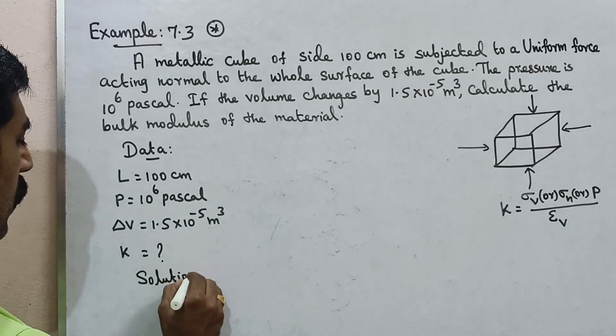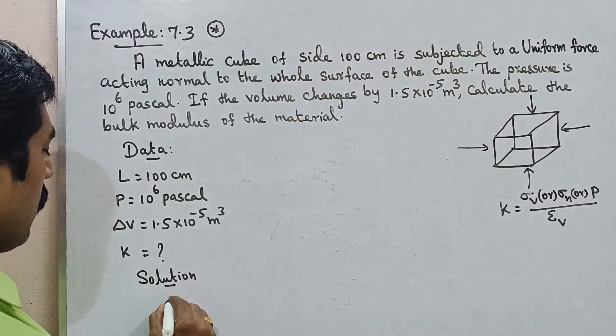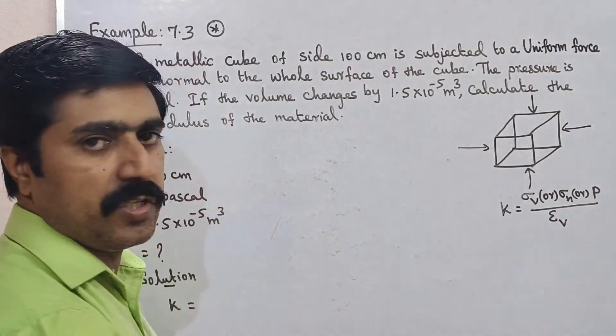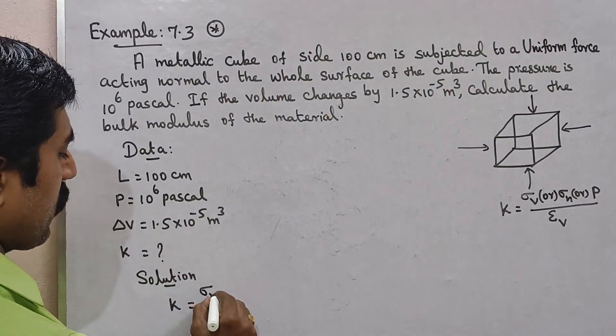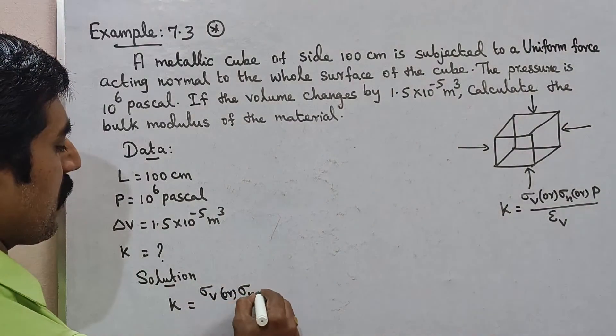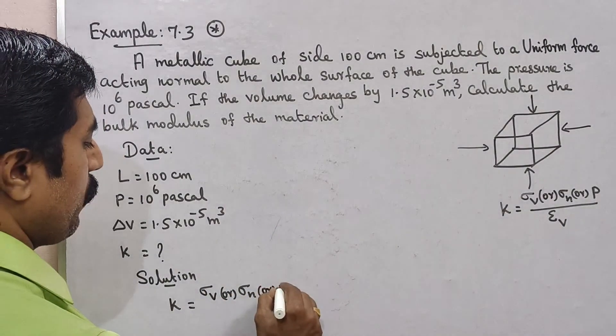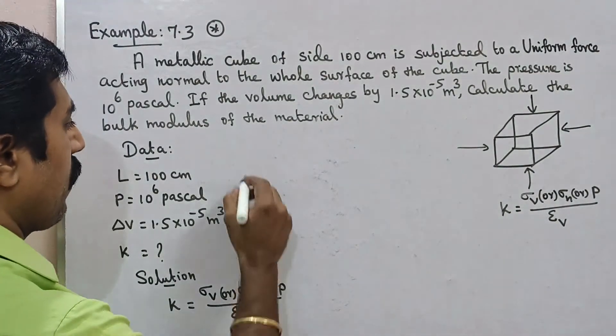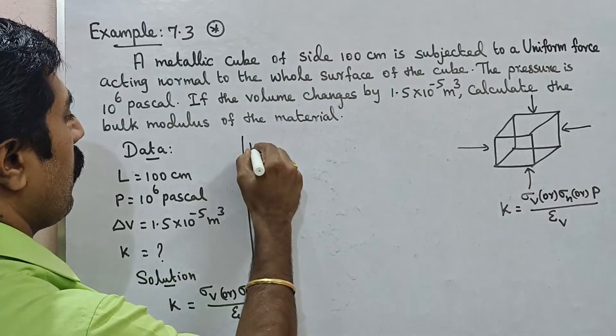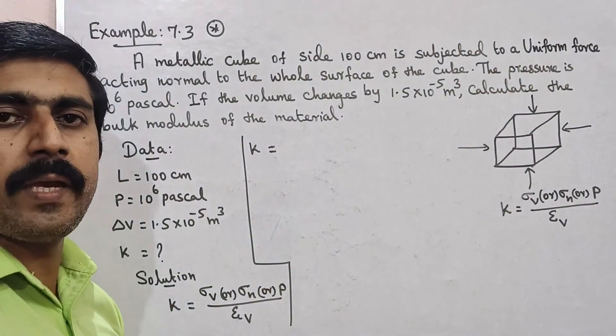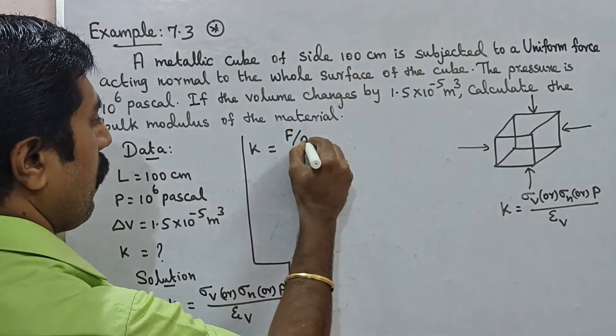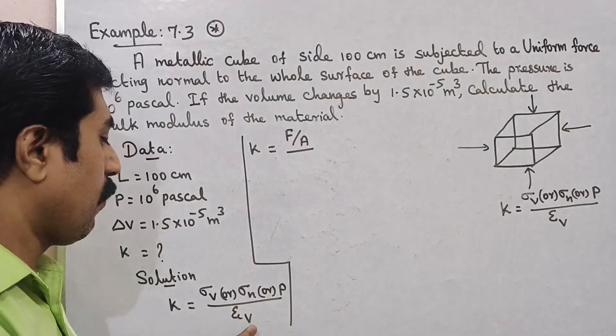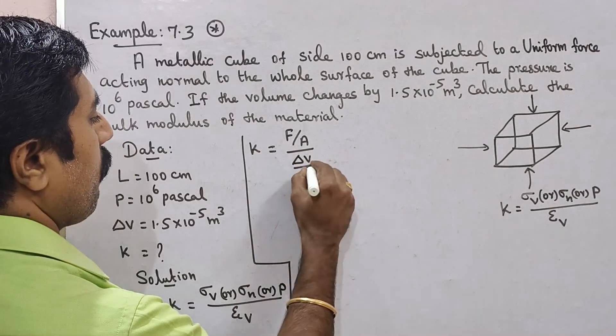Solution. Formula bulk modulus K is equal to volume stress, stress, pressure, divided by volume strain. Stress is equal to force by area divided by volume strain. Strain, change in size by original size. Volume, change in volume by original volume.